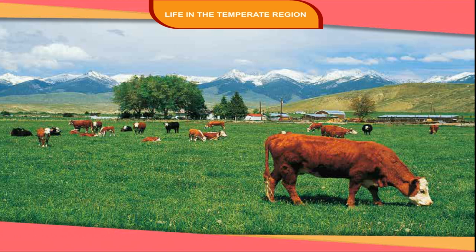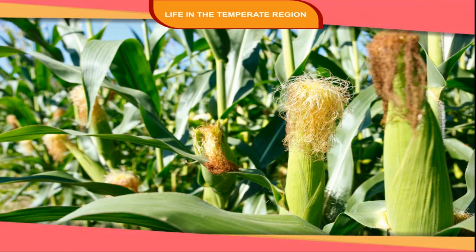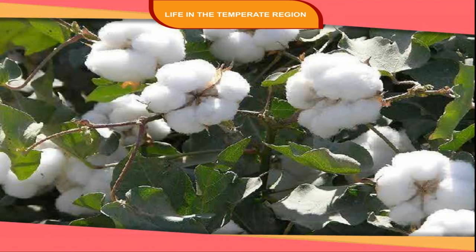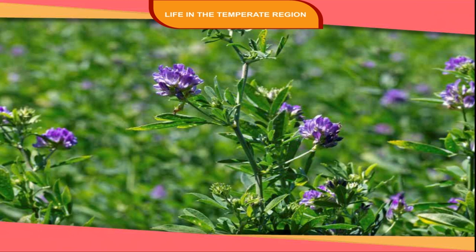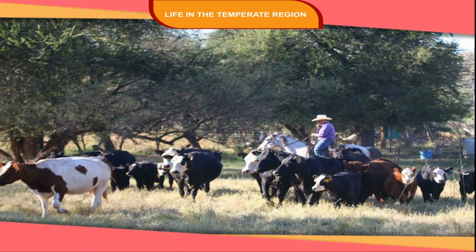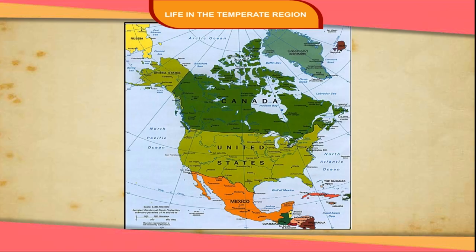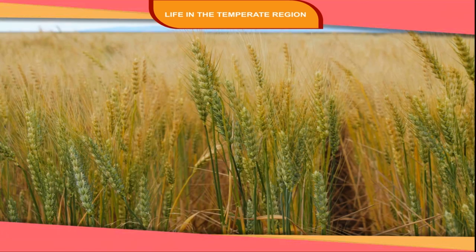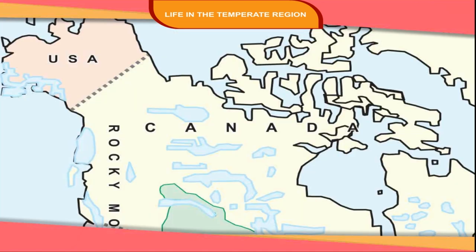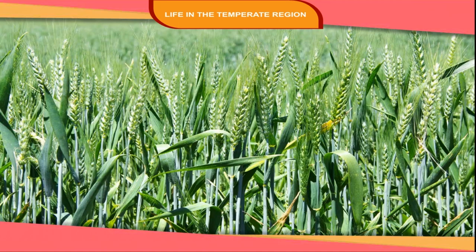Much of the original grasslands have now been converted into farmlands for growing crops or rearing animals. The major crops of this area are wheat and maize. Other crops including soya bean, cotton, potatoes and alfalfa are also grown. Areas with low rainfall are suitable for cattle rearing. In Canada, wheat is sown in the spring season and is ready within 100 days, with moisture provided by the melting of ice in spring. Most of the wheat, known as spring wheat, is exported to other countries. In the USA, another variety called winter wheat is grown because the winters in the southern parts of the prairies are less severe.